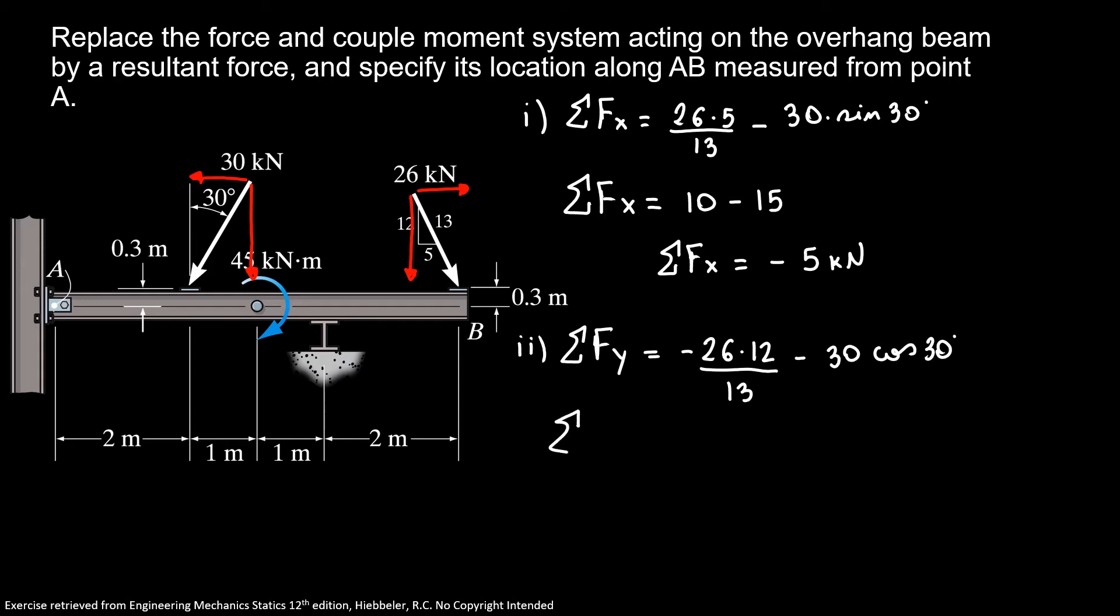So here I have minus 26 times 12 over 13 minus 30 cosine of 30 degrees. So here I have the sum of forces in Y direction equals minus 24 minus 26. So the sum of forces in Y direction equals minus 50 kilonewtons.